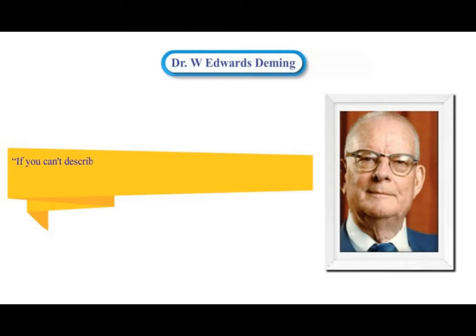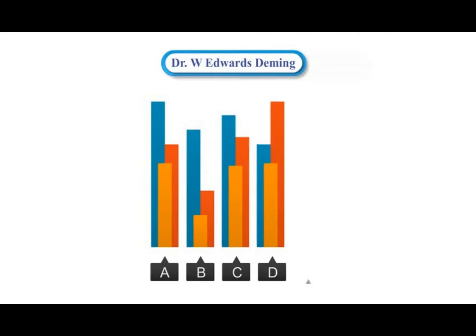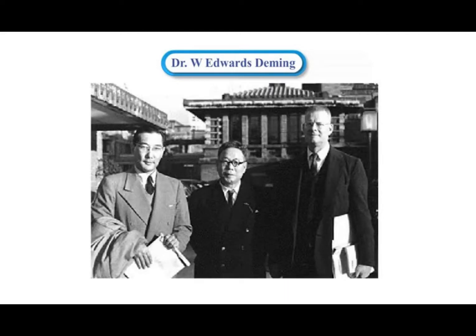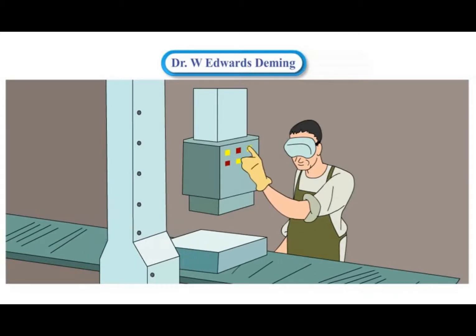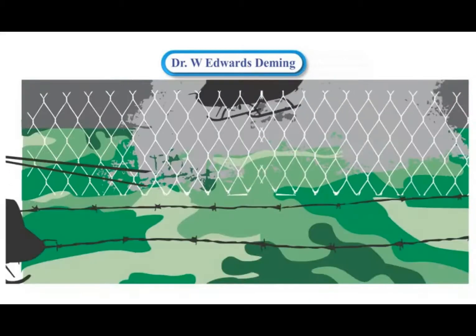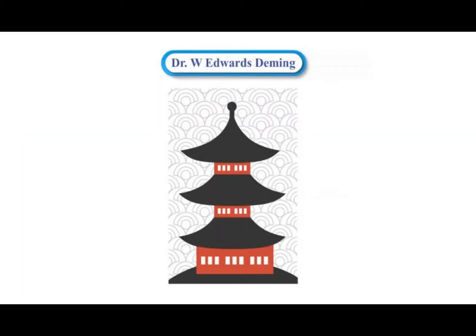Dr. W. Edwards Deming said, "If you can't describe what you are doing as a process, you don't know what you are doing." Dr. William Edwards Deming was an American statistician, college professor, author, lecturer, and consultant. He is credited with improving production in the United States during World War II, though he is best known for his work in Japan.